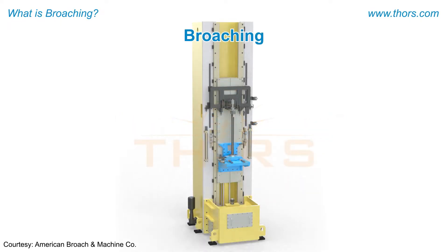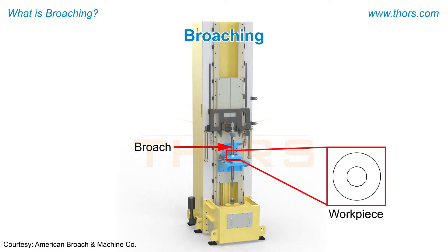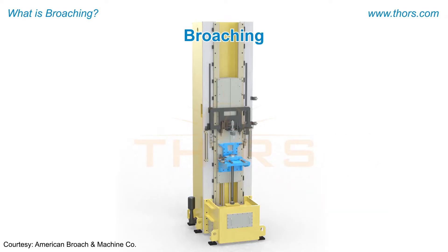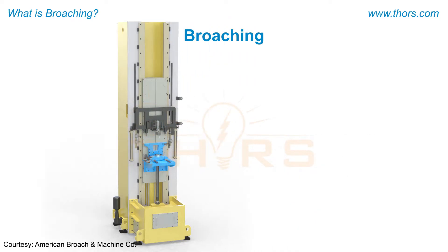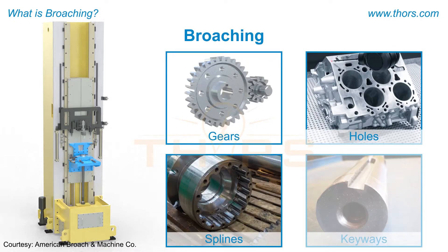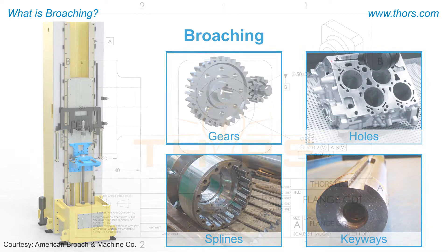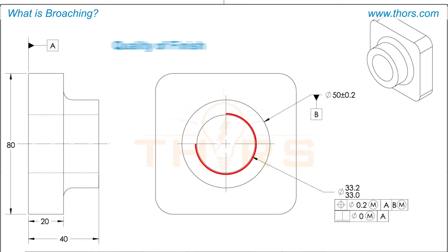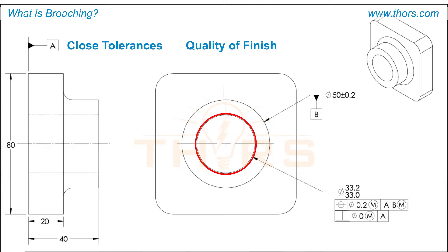Broaching is a machining process in which a broach is pulled or pushed through a workpiece or along the surface of a workpiece to generate a final part shape. Broaching is used extensively in machining gears, holes, splines, and keyways. The broaching process is economical when achieving quality of finish and close tolerances are essential.